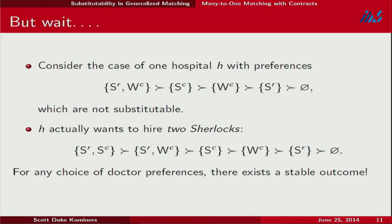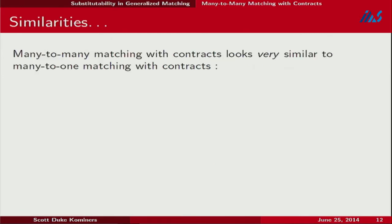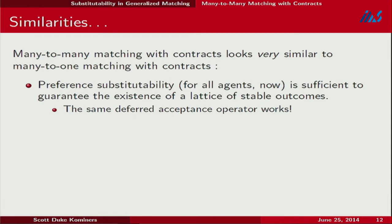This tells us that many-to-many matching with contracts might have something to say. In many-to-many matching with contracts, preference substitutability imposed on every agent — doctors and hospitals — is sufficient to guarantee the existence of a lattice of stable outcomes using the exact same generalized deferred acceptance operator. This is another way the Hatfield and Milgram paper keeps giving: no matter how much we expand the domain, this operator keeps working.